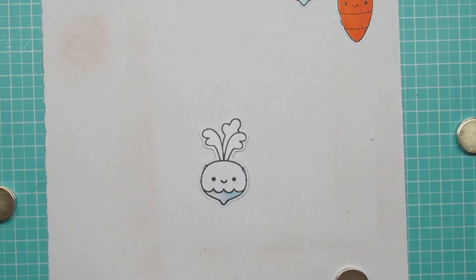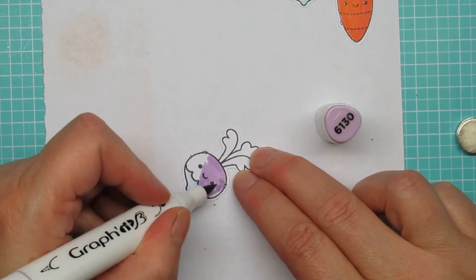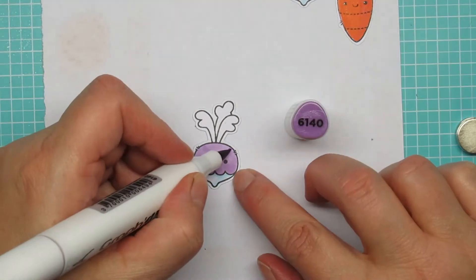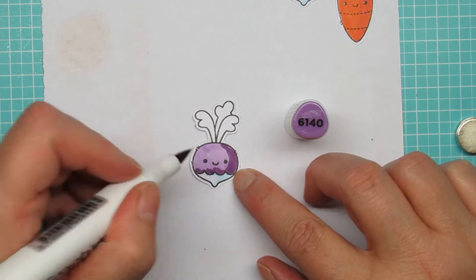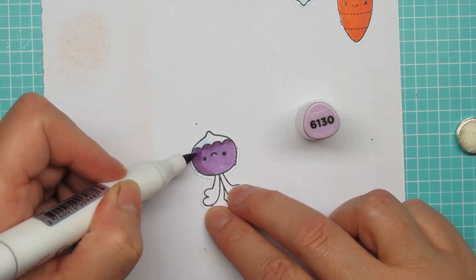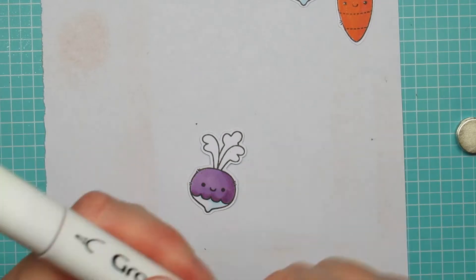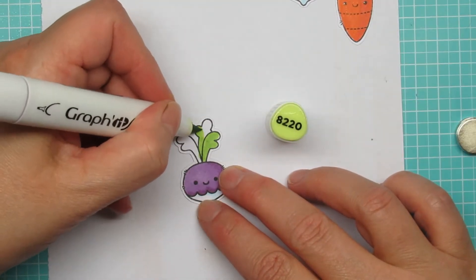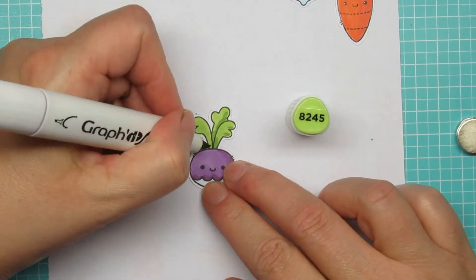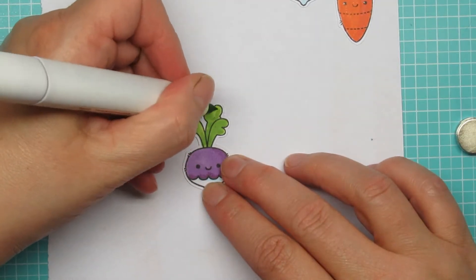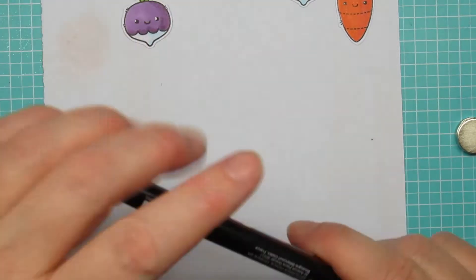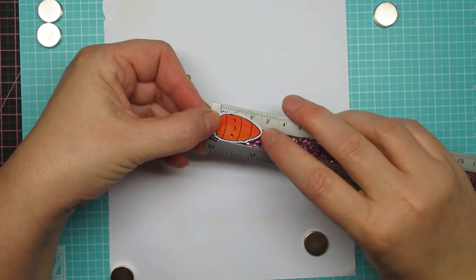So I think this is a turnip, I'm not exactly sure if that's the name in English. The sentiment by the way is from a different set, but this set is called Pick a Plushie and I only use the ones that grow under the ground because then you can pick them. The sentiment is Pick a Plushie Sentiment and I could have used 'I'd pick you every time' but I went for 'I'm rooting for you' because root vegetables.